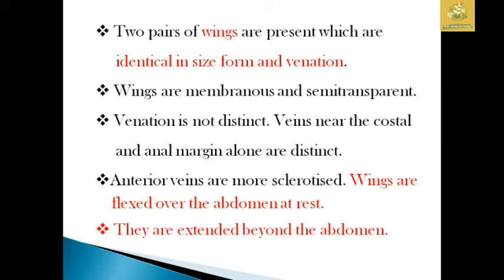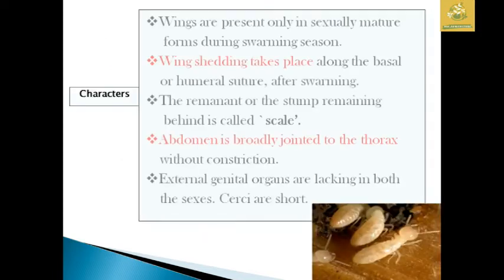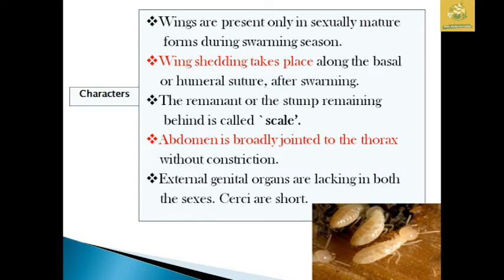These wings are extended beyond the abdomen in these insects. The wings are present only in the sexual reproductive forms during the swarming season. In other seasons they are absent, so wing shedding takes place along with the basal or humeral suture after swarming from one place to another. The remnant stump remaining behind is called the scale, which is the non-wing part of the insect.